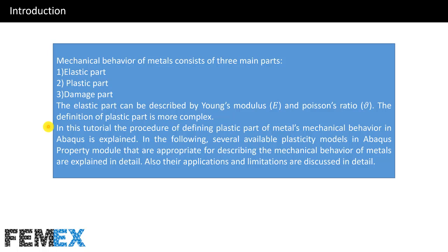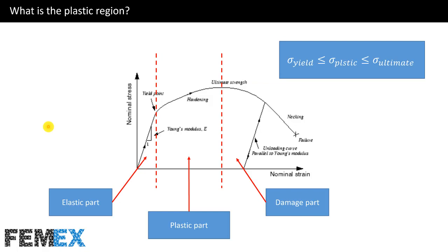I want to talk about what is the plastic region. This is the typical stress-strain curve of metals. This is the elastic part, this is the plastic part, and this is the damage part. The plastic part starts from the yield point to the ultimate point. The plastic stress is always greater than yield stress and smaller than ultimate stress.